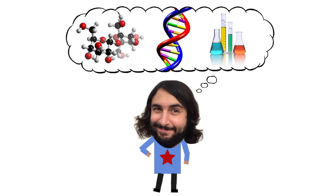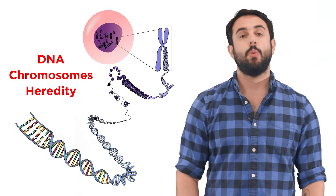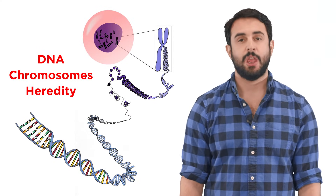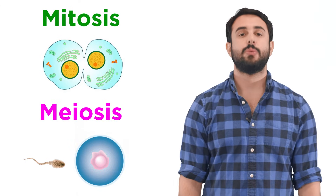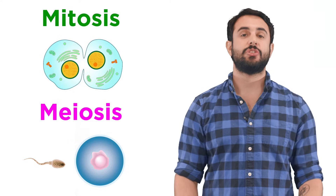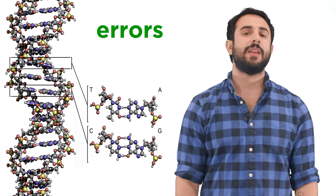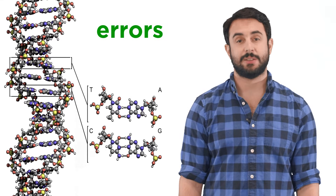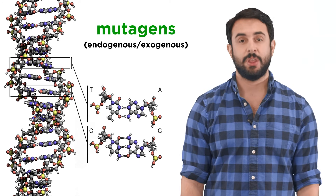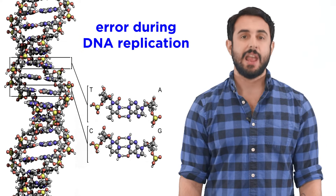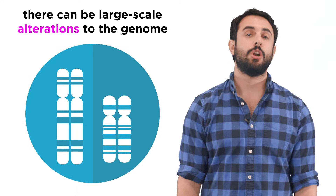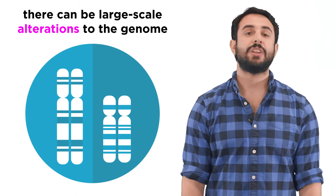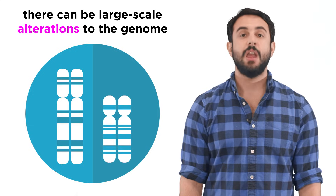It's Professor Dave, let's check out more chromosomes. We've learned a lot about DNA, chromosomes, and heredity. We've also learned about mitosis, the reason why all your cells have the same genetic material, and meiosis, the reason that gamete production and subsequent fertilization produce such genetic diversity from generation to generation. But sometimes there are errors that occur throughout this process. We have discussed mutation in the genome due to both endogenous and exogenous mutagens, as well as random error by replicative machinery. But there are large-scale alterations to the genome that can occur by completely different mechanisms, which can have enormous effects on the resulting organism. Let's take a look at some of these now.